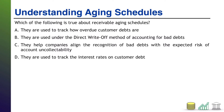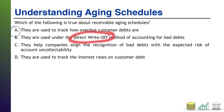Welcome back. Starting at the top — A: are receivable aging schedules used to track how overdue customer debts are? Yes, that's exactly what they're used for. They take customer debts and divide them into buckets by how old they are, so you can see the big picture. B: they are used under the direct write-off method of accounting for bad debts. The direct write-off method is the non-US GAAP approved method — that is not the allowance method. Aging schedules are a form of percent of receivables estimation under the allowance method, so this one is not true.